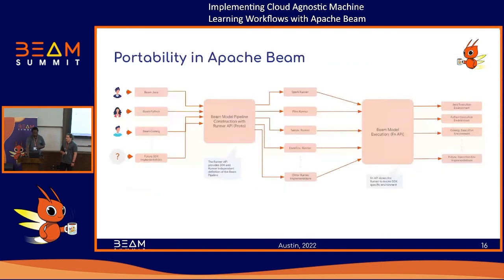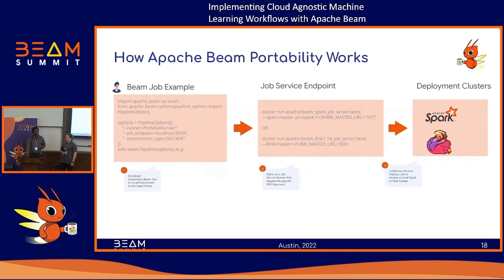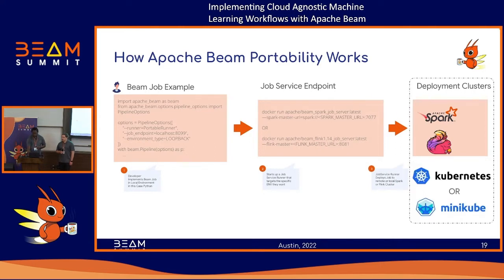As a developer, you don't have to go through all these details. You pick your Beam environment and there's a job service — an endpoint that abstracts all the runner implementation. You start with your Beam job, your Python or Java code, and submit it to the job service endpoint. The job service endpoint converts it to the portable format and submits your job to the Spark or Flink cluster. And the cool thing is the cluster can be running locally on Minikube, Docker Desktop, or on a production-grade Kubernetes infrastructure.